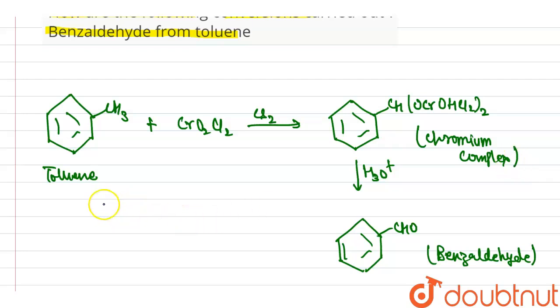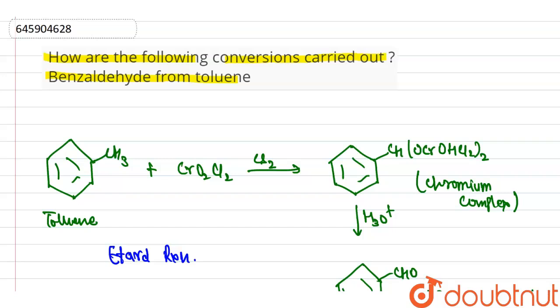And this reaction is also called Etard reaction. So that is the conversion of benzaldehyde from toluene.